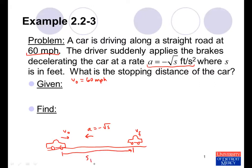The implication, if we're trying to find the stopping distance, is that the final velocity of the car is zero. It comes to rest. And again, the acceleration is equal to negative square root of s feet per second squared.